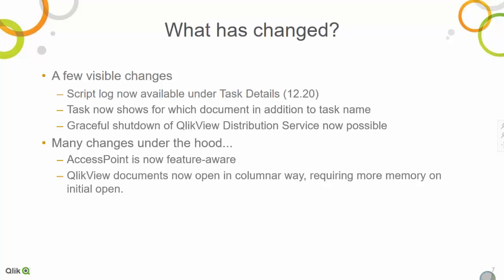QlikView documents are now opened in a columnar way when loaded into memory, instead of the old row-based way they are stored on disk. This leads to an increase in memory usage during the initial open of a document. So the memory footprint of both QlikView Desktop and QlikView Server will be bigger when opening a document. Once the document is opened and loaded into memory the usage drops back down, but there is an initial peak that requires more memory than it did in 11.20.